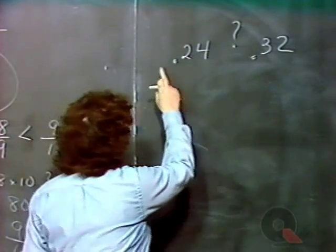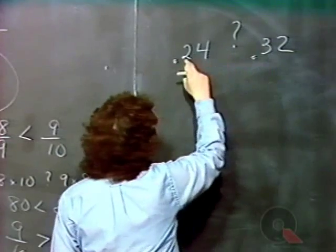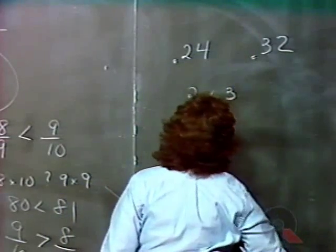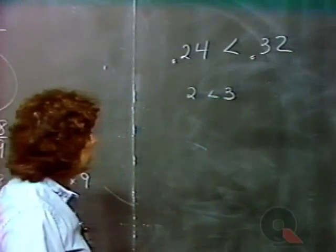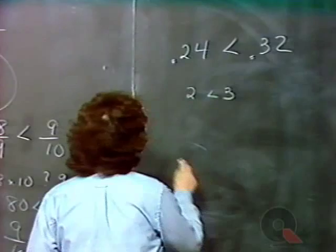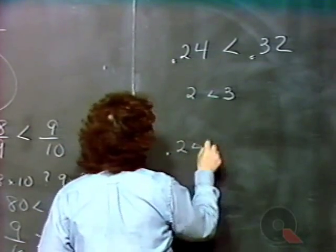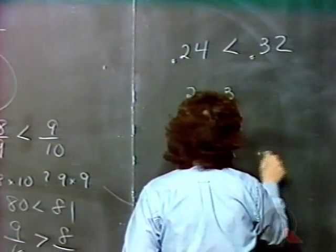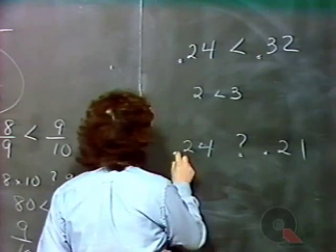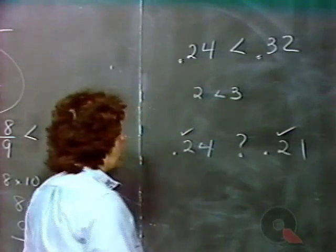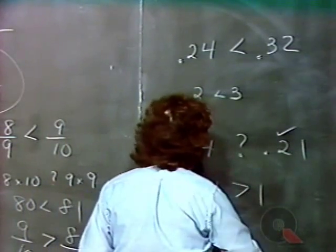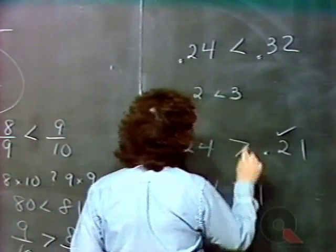For example, comparing .24 with .32: these are pure decimal numbers. We start with the first digit to the right of the decimal point. Since 2 is less than 3, .24 is less than .32. On the other hand, comparing .24 with .21: the first digits are both 2, so we move to the second digit. Since 4 is greater than 1, .24 is greater than .21.